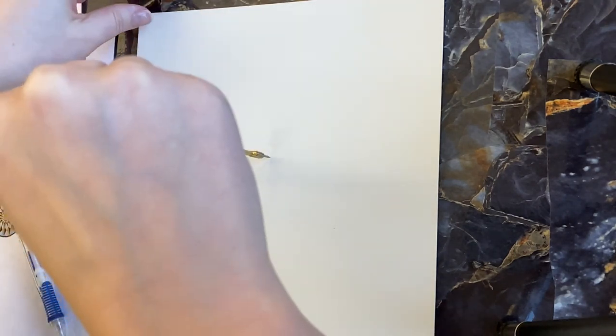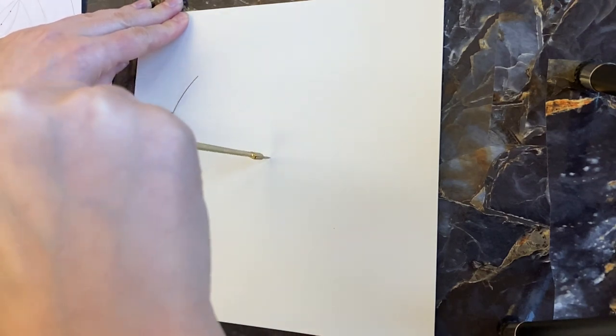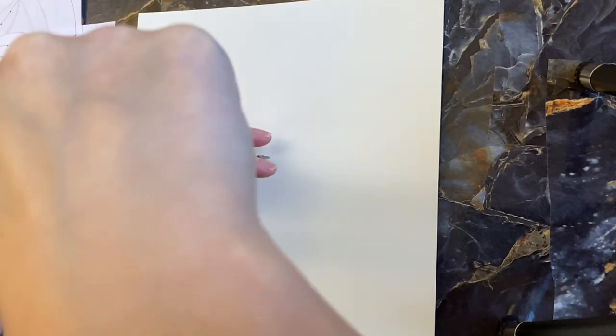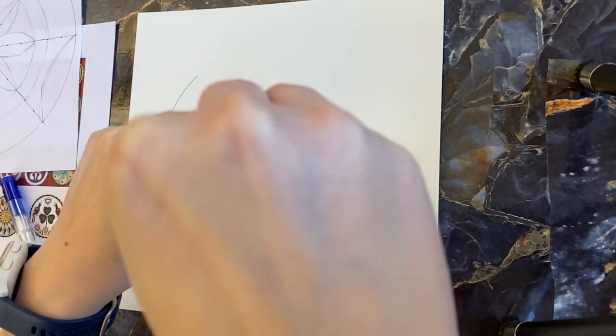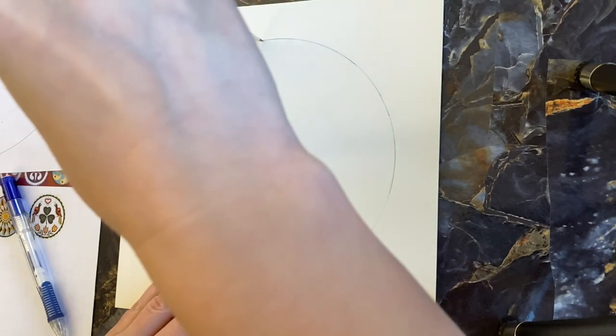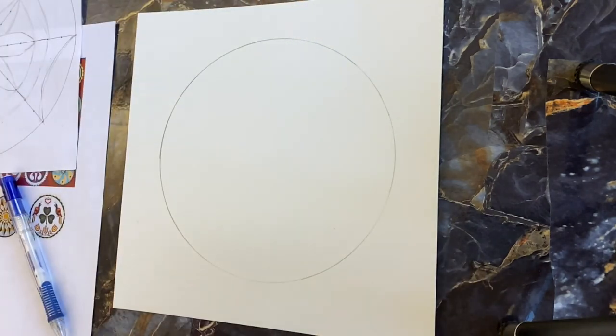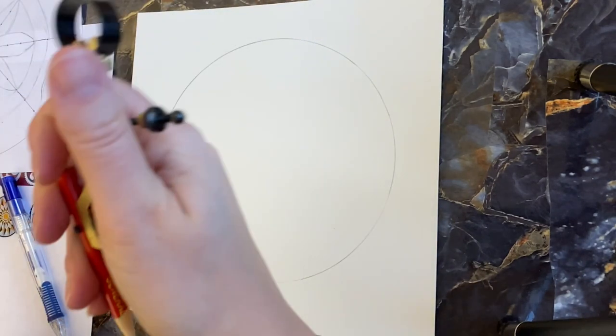The point goes in the middle and the pencil is on the outside. You can either spin the compass or the paper to draw your circle. If you're afraid it's going to move, you can hold your hand there. There we go—now I have a perfect circle drawn.